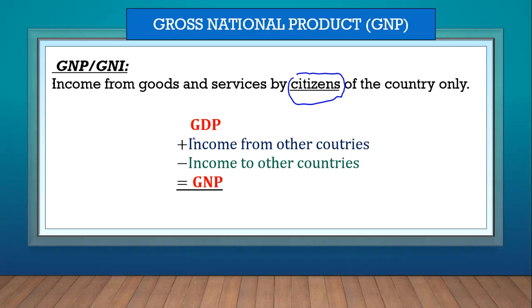To go from GDP to GNP, you must add all the income that's coming from other countries. For example, a South African artist performs in the UK — they're going to bring that money back to the country, so we add it. But income that's going to be leaving the country — say Beyoncé comes to perform in South Africa, she's going to take that money back to the US — we subtract it. So GDP plus income coming in from other countries, minus income leaving the country, gives you GNP.